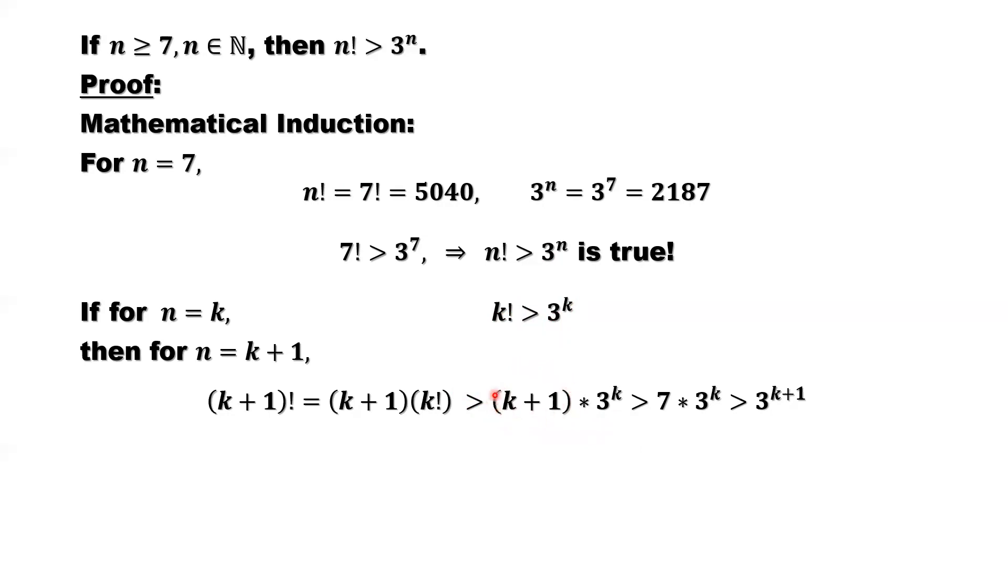From here, we replace k plus 1 by 7. k is any k, n equals k, bigger than or equal to 7. So k plus 1 is bigger than 7. If we replace k plus 1 by 7, that means this side is reduced.